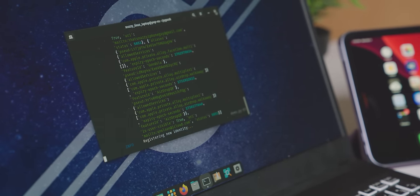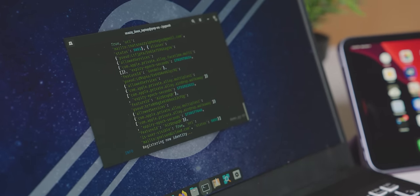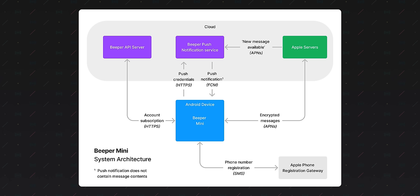So, to continue supporting push even when the app is closed, when your phone is off, or you've lost service or whatever, Beeper built an APN to BPN — Beeper Push Notification Bridge — for use when Beeper Mini isn't running at all.